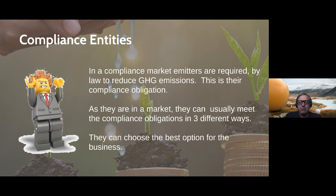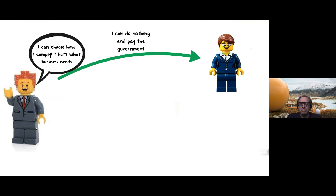In a compliance market, emitters are required by law to reduce greenhouse gas emissions — that's their compliance obligation. At the end of every year they submit their emissions to government along with an obligation for what their emission reductions need to be. They can meet these compliance obligations in several ways, choosing the option best for their business. The first option is to do nothing and simply pay the government $30 per ton of emissions they didn't reduce — the default worst-case scenario, which can add up to millions of dollars.